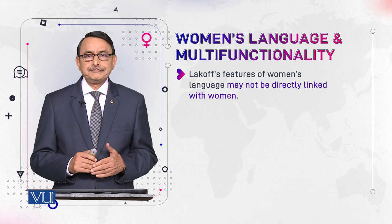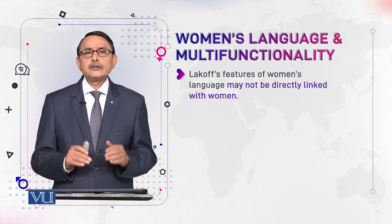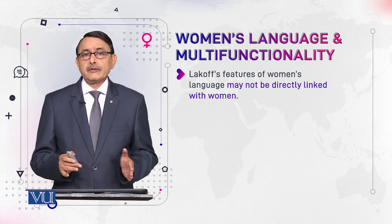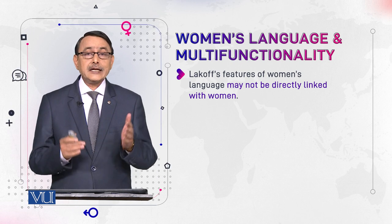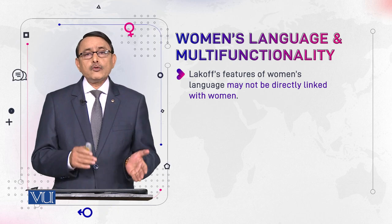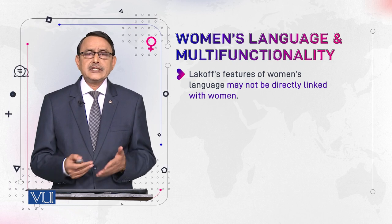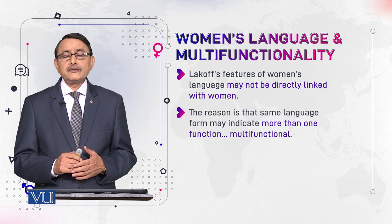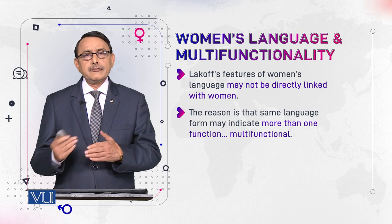We are discussing Lakoff's views — not that her views are totally irrelevant. It was she who first pointed out that language is related with gender. But as time passes, things are reviewed and researched, so old things are re-analyzed and re-evaluated. Since the same form performs multifunctionality, how can you directly relate one utterance with women or men?